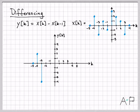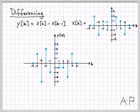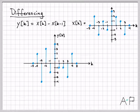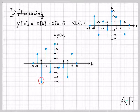We just keep grabbing pairs of values and subtracting them all the way down the time axis, and we get a signal that looks like this. What you can see is when you have adjacent amplitudes that are very different, the difference is a very large value. When adjacent values in amplitude are small, the difference is a small number. If we had repeated values — say the same value at time 3 and time 4 — the difference would be 0. So differencing is really a high-pass operation.